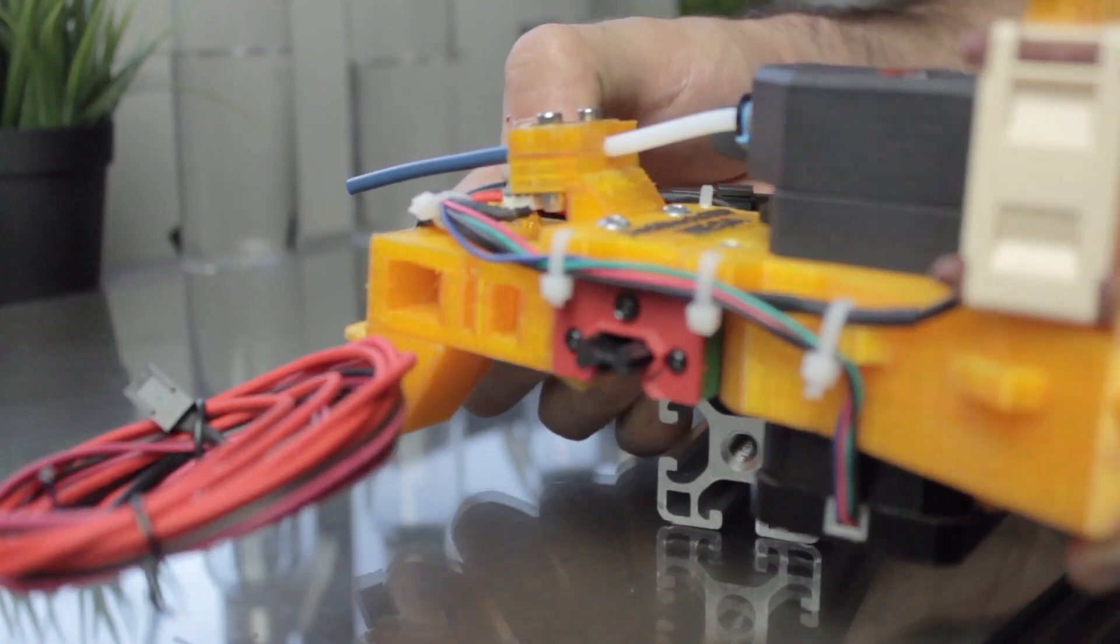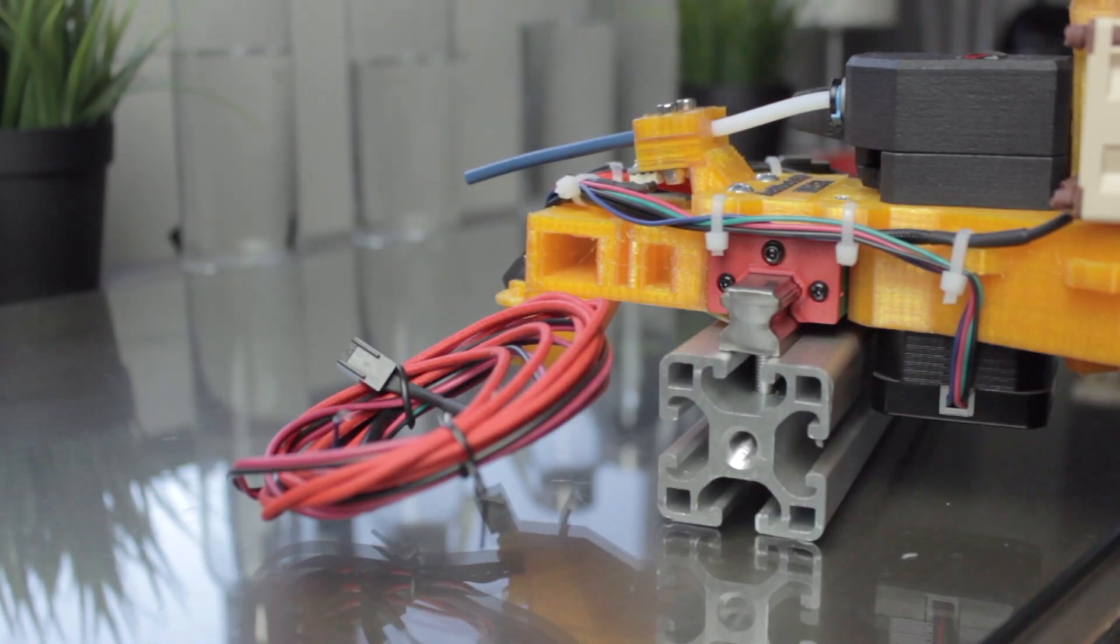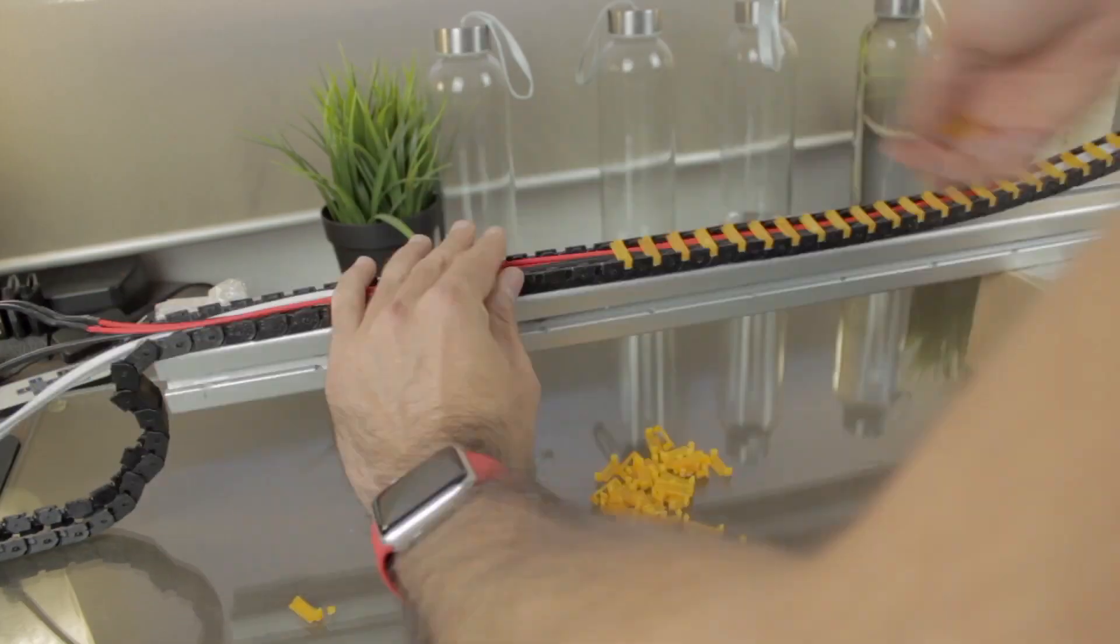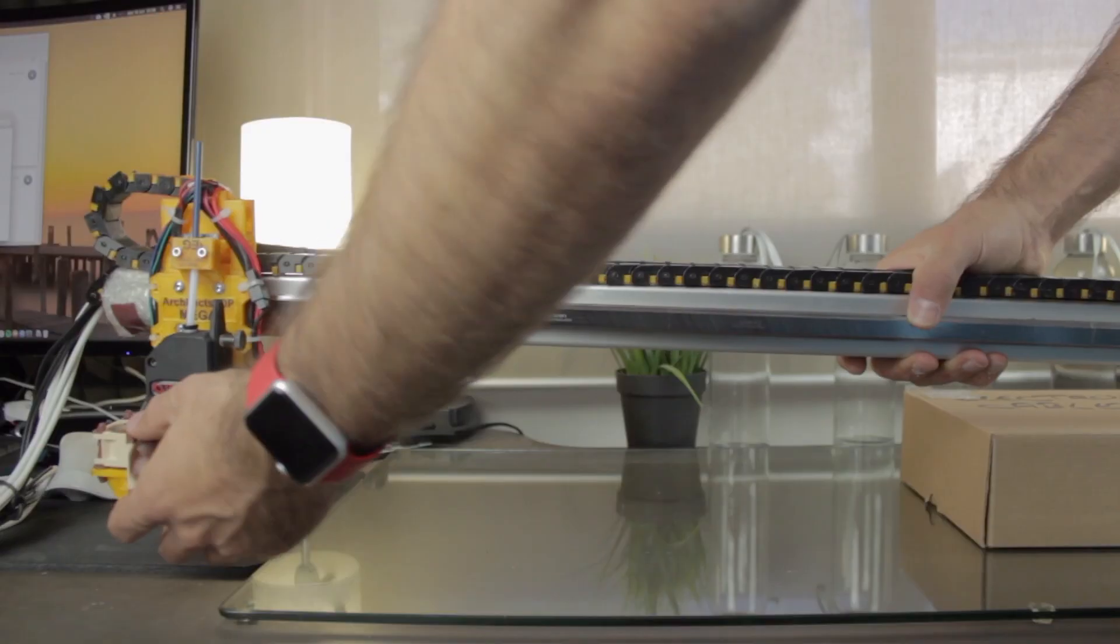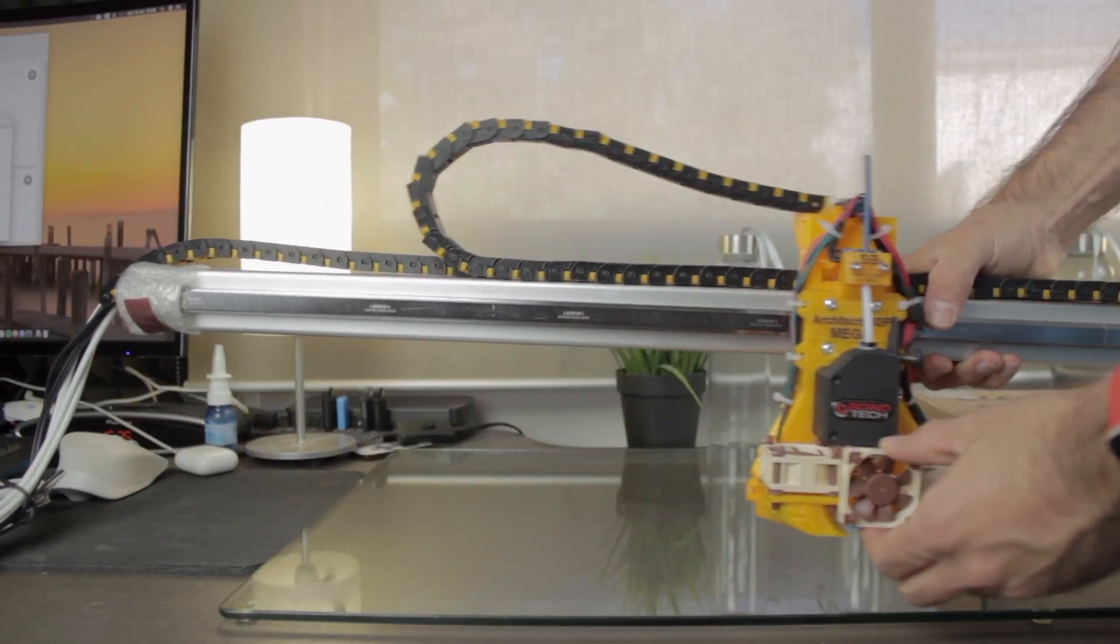In the last episode we started the assembly of the x-axis of the 3D printer, putting together the 40x40 aluminum profile with the Hiwin railing. We also installed the extruders in place, made the cable wirings, and finally installed the cable chains, getting at the end of the video this amazing result.